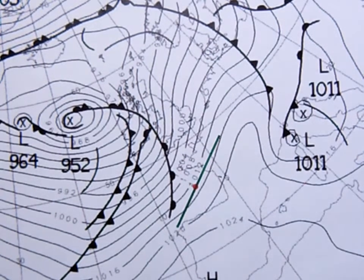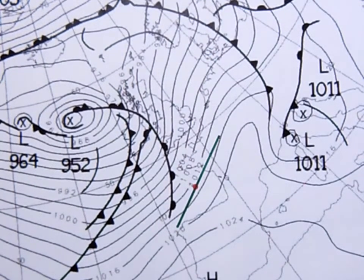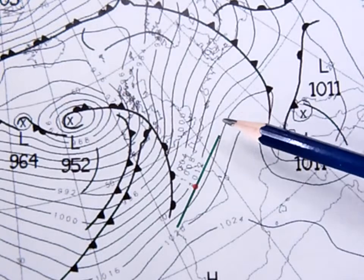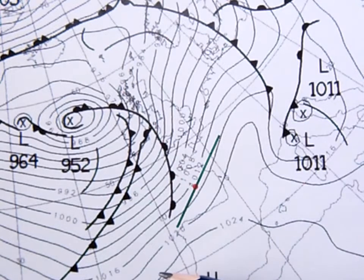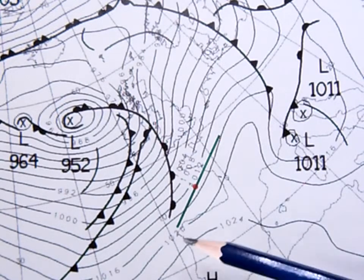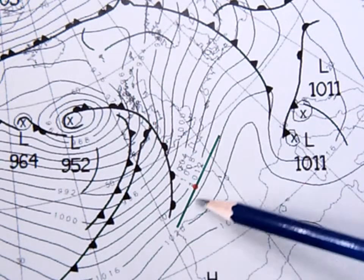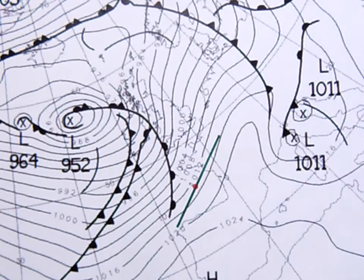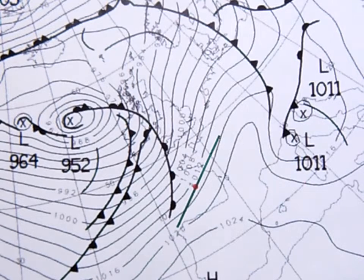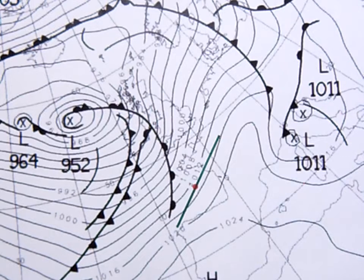Now I don't know which end the wind is blowing — it's either blowing coming from here going down there, or it's coming from here blowing up that way. The way I determine this is to look at the isobars and use Buys-Ballot's Law. Buys-Ballot's Law states that if you're facing the wind, the low will be on your right.